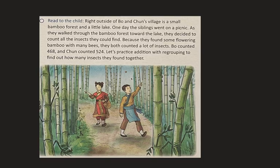Right outside of Bo and Chun's village is a small bamboo forest and a little lake. One day, the siblings went on a picnic. As they walked through the bamboo forest toward the lake, they decided to count all the insects they could find. Because they had found some flowering bamboo with many bees, they both counted a lot of insects. Bo counted four hundred sixty-eight and Chun counted five hundred twenty-four. Let's practice addition with regrouping to find out how many insects they found together.